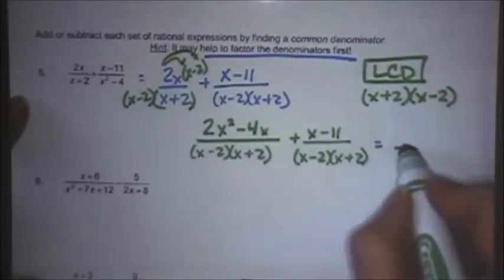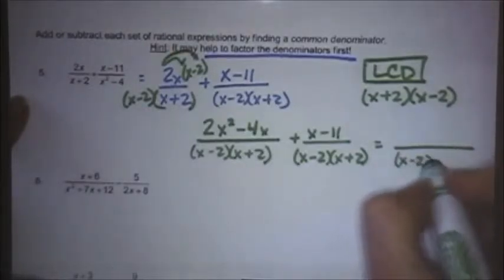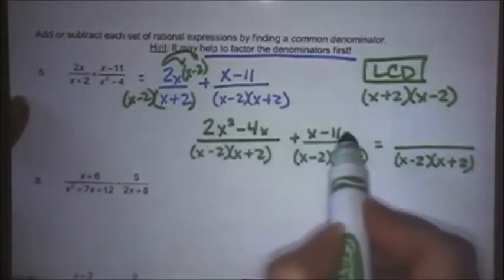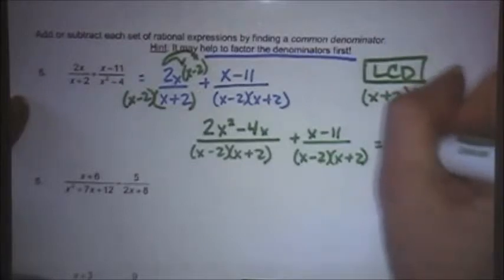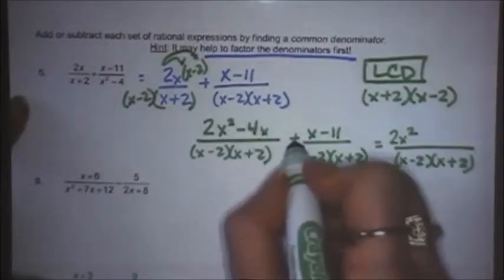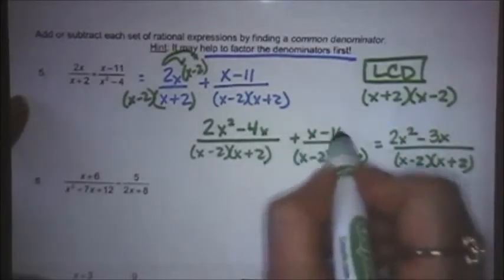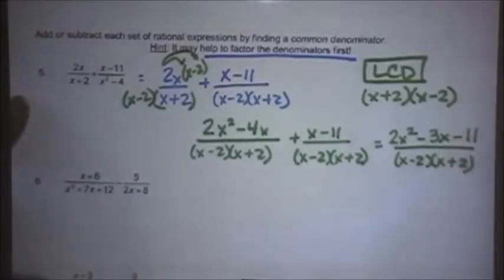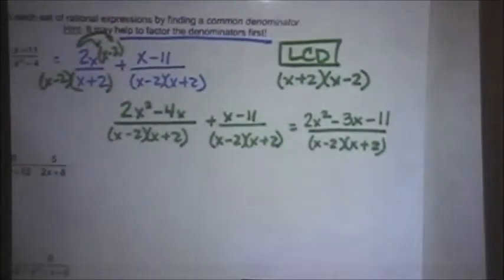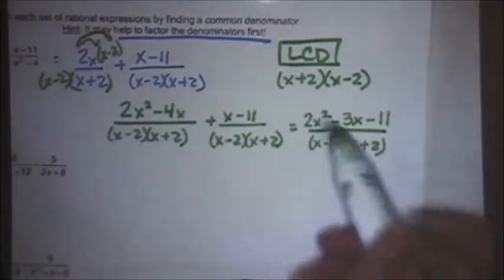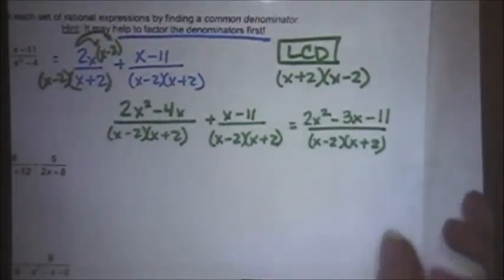Now I'm going to have to distribute on top because otherwise I don't know how I'm going to be able to add. So that gives me 2x squared minus 4x over my LCD of x minus 2, x plus 2, plus x minus 11. Now that I've done that, this is just like a regular fraction — add across the top: 2x squared, minus 4x plus x is minus 3x, and plus negative 11 is minus 11. I look at it to make sure it doesn't factor. 2x squared minus 3x minus 11 — no, it doesn't factor, so I can move on.